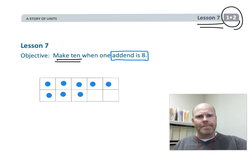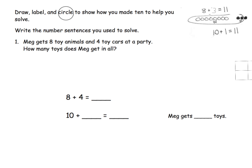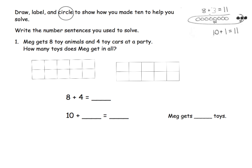So it says draw, label, and circle to show how you made 10 to help you solve, then write the number sentences that you use to solve the question. Eureka is demonstrating by just drawing these little circles, and there's nothing wrong with that. But I think our first graders might want and appreciate a little bit of extra scaffolding, in which case I would use a couple of 10 frames. Let's represent the problem using 10 frames — we have 8 toy animals.